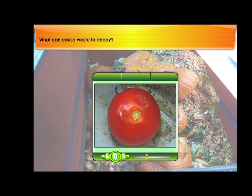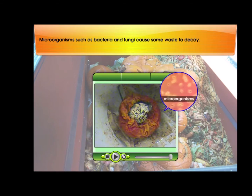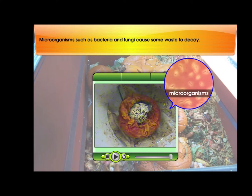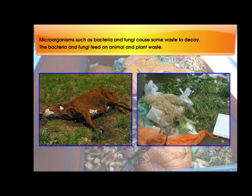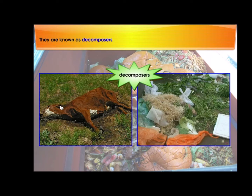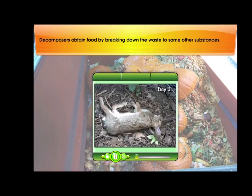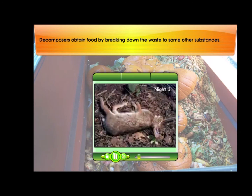Microorganisms such as bacteria and fungi cause some waste to decay. The bacteria and fungi feed on animal and plant waste. They are known as decomposers. Decomposers obtain food by breaking down the waste to other substances.